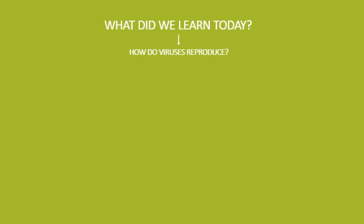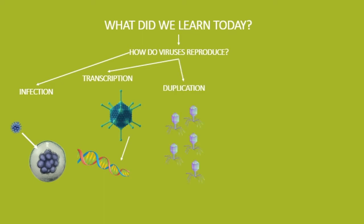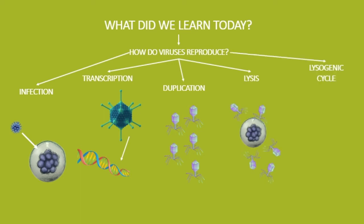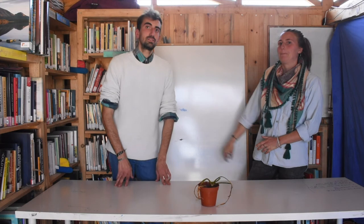What did we learn today? We saw how viruses reproduce. Infection: the virus enters the cell. Transcription: the genetic material gets ready to be duplicated. Using the tools of the cell, the genetic material and the protein box of the virus are duplicated. Lysis: the new viruses escape the cell and the cell dies. Some viruses enter a lysogenic cycle, where they hide their genetic material among the genetic material of the cell, waiting for a moment to duplicate. And with that, I think we are done for today. See you in the next class, guys! Hope you liked it! Bye bye!